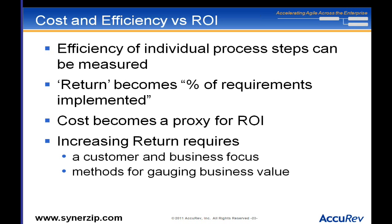Because measuring value is so hard, the return becomes: what percentage of my requirements did I implement? I implemented 100%, so it's a 100% return — but I don't actually know what that value is. Somebody else decided what the contents of the release would be and what the requirements are; I have no control over that. So instead I focus on cost — cost becomes a proxy for ROI.